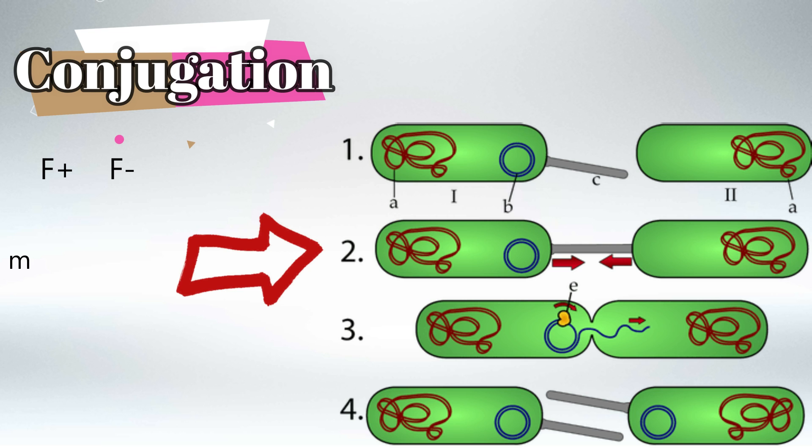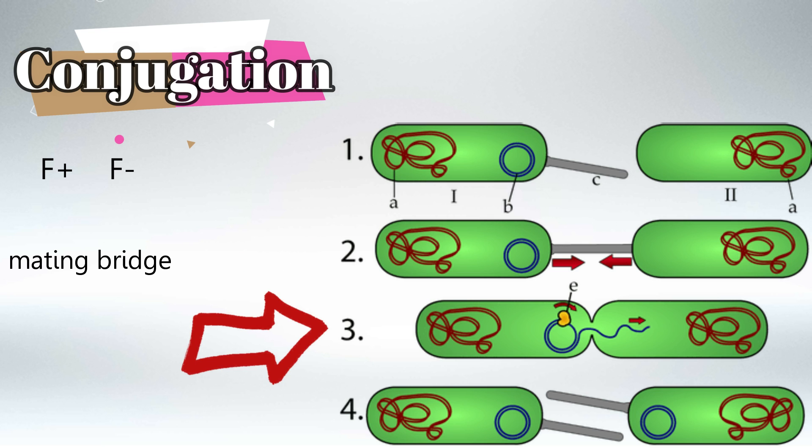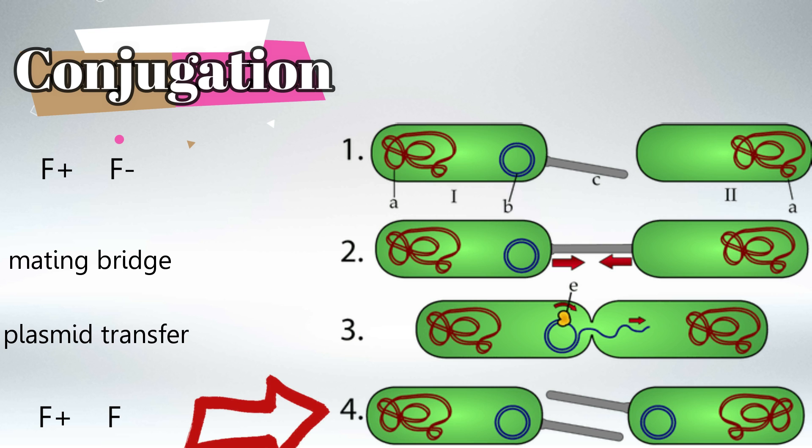So the F positive bacteria will link with the F negative bacteria and form the mating bridge. Then the F positive bacteria will make a copy of its plasmid which encodes for the bacterial sex pilus and will transfer this copy to the other bacteria. So now both bacteria have a plasmid which encodes for a sex pilus and both are called F positive. This is the process of conjugation.